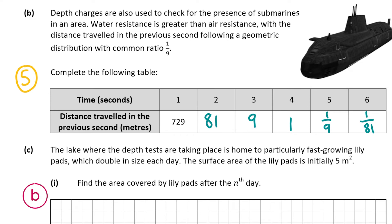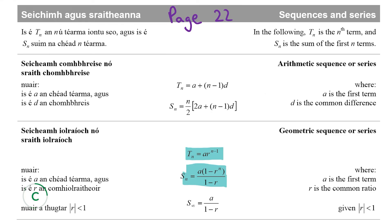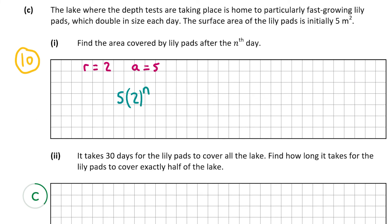Part c1 is worth 10 marks. The lake where the depth tests take place is home to fast-growing lily pads which double in size each day. The surface area is initially 5 m². We need the area after the nth day. Since the pads double daily, r = 2 and a = 5. Using the general term formula, but since the pads start at 5 on day 0 rather than day 1, the formula is t_n = 5 × 2^n rather than 5 × 2^(n-1).